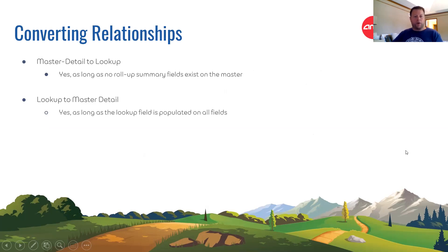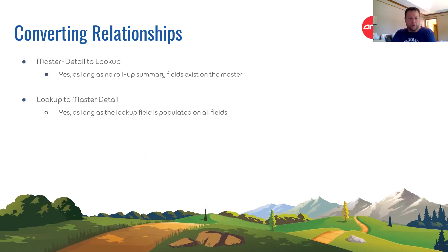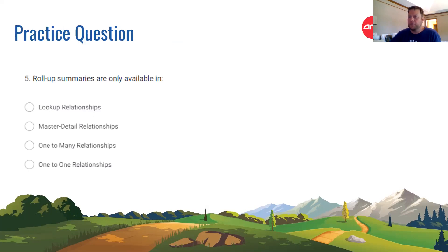Converting between relationship types: you can convert a master-detail to a lookup as long as you don't have a roll-up summary field — you'd need to delete the roll-up summary first. You can also convert a lookup to a master-detail, but the lookup field must be populated on all records so every record has a master record it's pointing to before the conversion.